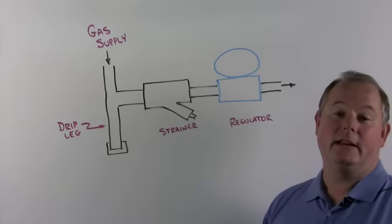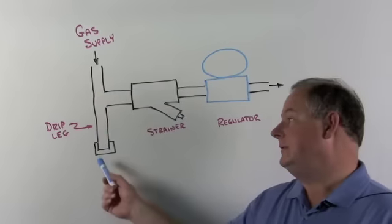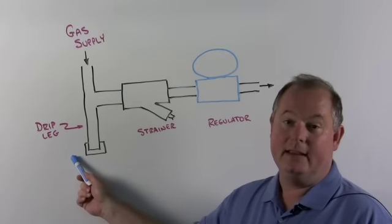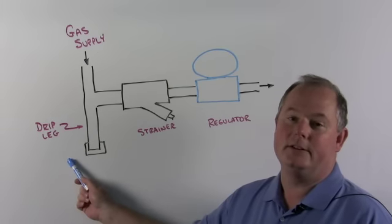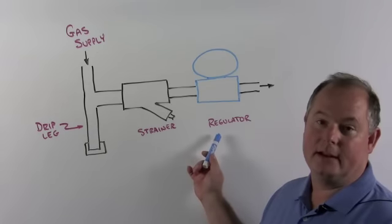Here's the normal setup of a gas regulator in a gas train. We've got the gas supply coming in. We always want to put a drip leg. It's easy to forget. It's kind of hard to do. You need the drip leg. You need the Y strainer, and then into the gas regulator.